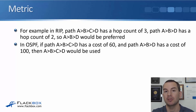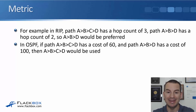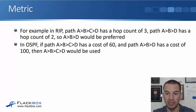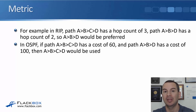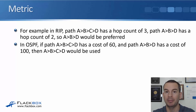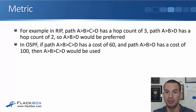Now we might have exactly the same network topology but we're using OSPF. With OSPF, maybe path A-B-C-D has a cost of 60, and path A-B-D has a cost of 100 because the A-B-D path has lower bandwidth links. Remember, OSPF takes bandwidth into account by default. With our metric, it's always the lowest value that is preferred. So with OSPF, it would be the other path, A-B-C-D, that would make it into the routing table.